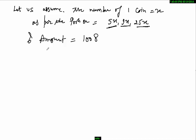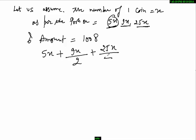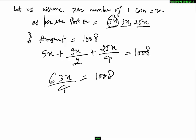We make an equation: 5x (for 1 rupee coins, added directly) plus 9x by 2 (for 50 paise coins) plus 25x by 4 (for 25 paise coins) equals 1008. Simplifying this gives 63x by 4 equals 1008, so x equals 64.